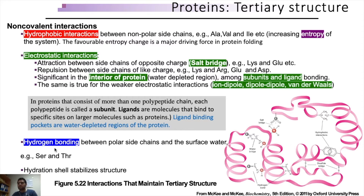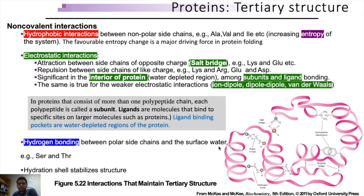The third non-covalent interaction is hydrogen bonding. Hydrogen bonds can form both in the inner core and on the surface of the protein. In the inner core, hydrogen bonds form among different residues of the polypeptide chain. The presence of water molecules can prevent their formation internally, as hydrogen bonding with water would be preferred. On the surface, water molecules favor the formation of hydrogen bonds with surface amino acid residues, and these interactions increase the overall enthalpy of the system.